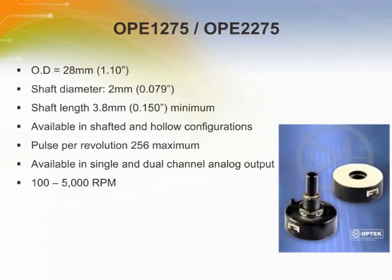The OPE-1275 and OPE-2275 are designed for small shaft motors with a shaft diameter of 2mm and a minimum length of 3.8mm. The OPE-1275 provides single channel analog output for speed of rotation, while the OPE-2275 provides a dual channel analog output for speed and direction of rotation.